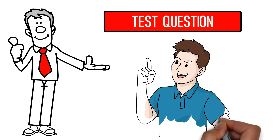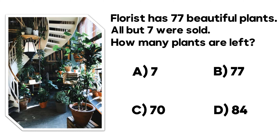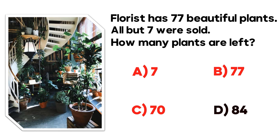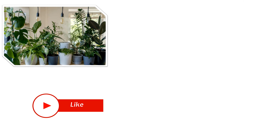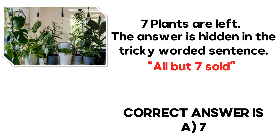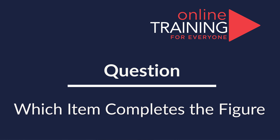Here is a simple but tricky question which tests your math skills as well as attention to details. The answer is 7 planes are left. The answer is hidden in the tricky wording 'all but 7 solved.' So the correct answer is choice A — 7. Hopefully you read the question correctly, understood it well, and solved it on your own.